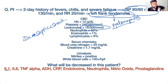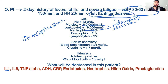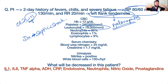The primary infection is pyelonephritis — inflammation of the kidney with a lot of pus and infection. Pyelonephritis has caused septic shock in this patient. This is very common in elderly patients, who can develop UTI, progress to pyelonephritis, and then develop septic shock.